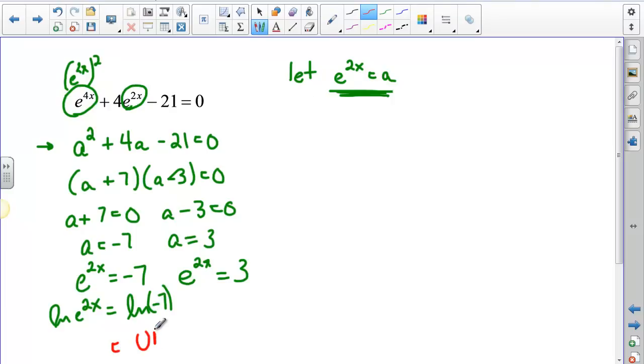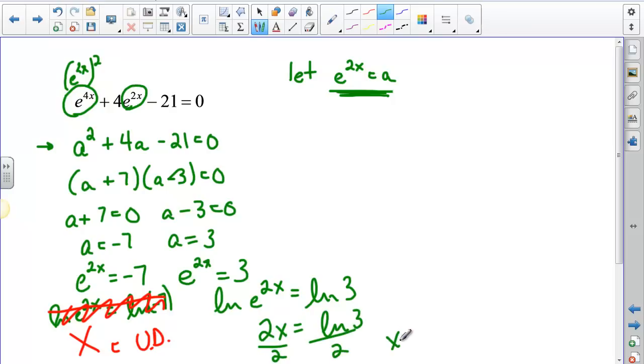So this part here means it's undefined, so we're out. We can't use that. But we could finish the problem here by taking the natural log of e to the 2x and the natural log of 3. Natural log of 3 we can do. Natural log of e to the 2x is simply 2x. Natural log of 3 is still natural log of 3. And then we divide both sides by 2, divide by 2, divide by 2, and we get x equals the natural log of 3 divided by 2. Which again is an exact value, but we want an approximate answer. And so I get .5493 as my approximate answer.